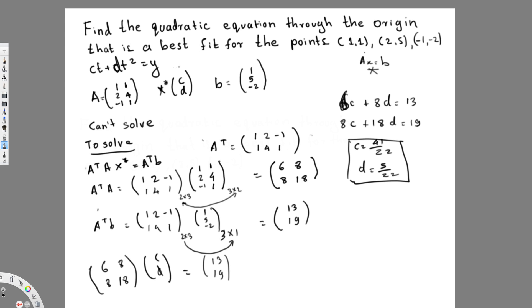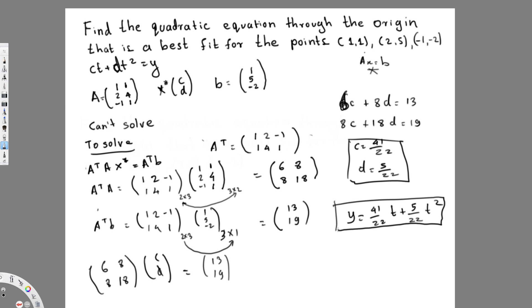We're not done yet — the question asks for the quadratic equation through the origin. So we write: y = (41/22)t + (5/22)t². This is the final answer.